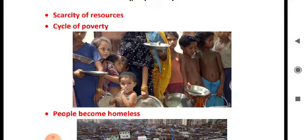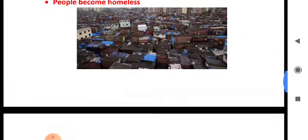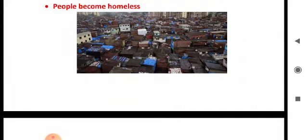The cycle of poverty is the most important point. In developing countries, a large number of people live in small congested areas with poor sanitation, and this condition spreads a number of diseases. There are not enough jobs, so people are unable to break free of the cycle of poverty. People become homeless, and as a result, slums have developed where living conditions are very poor. There are problems of water supply, lighting, sanitation, etc.